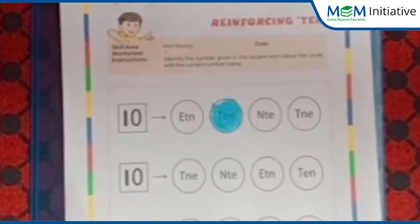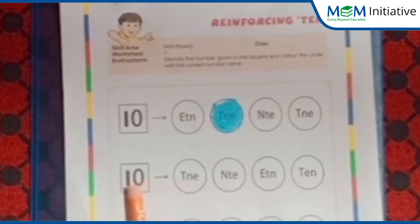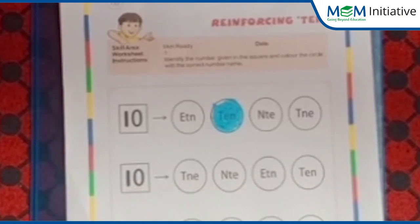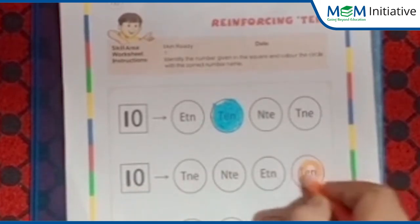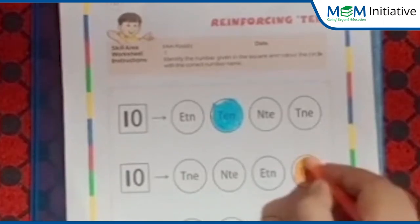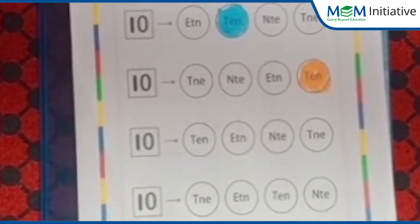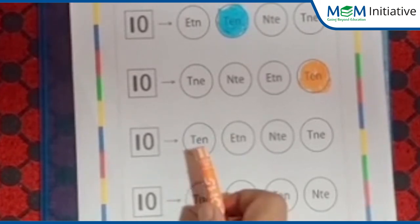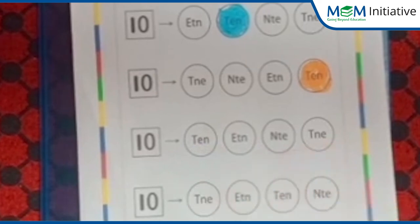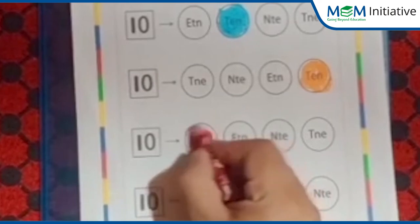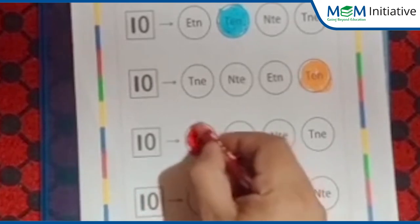Now next, tell me which is the correct spelling of number name 10? Yes, this is the correct spelling. Now color it like this. Next, tell me which is the correct spelling of number name 10? Yes! This is the correct spelling of number name 10.